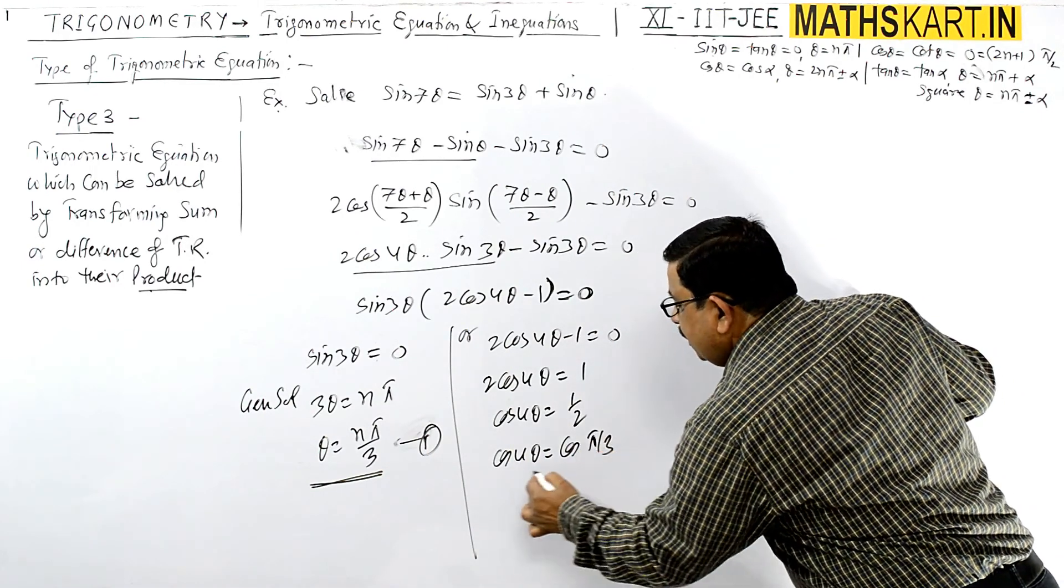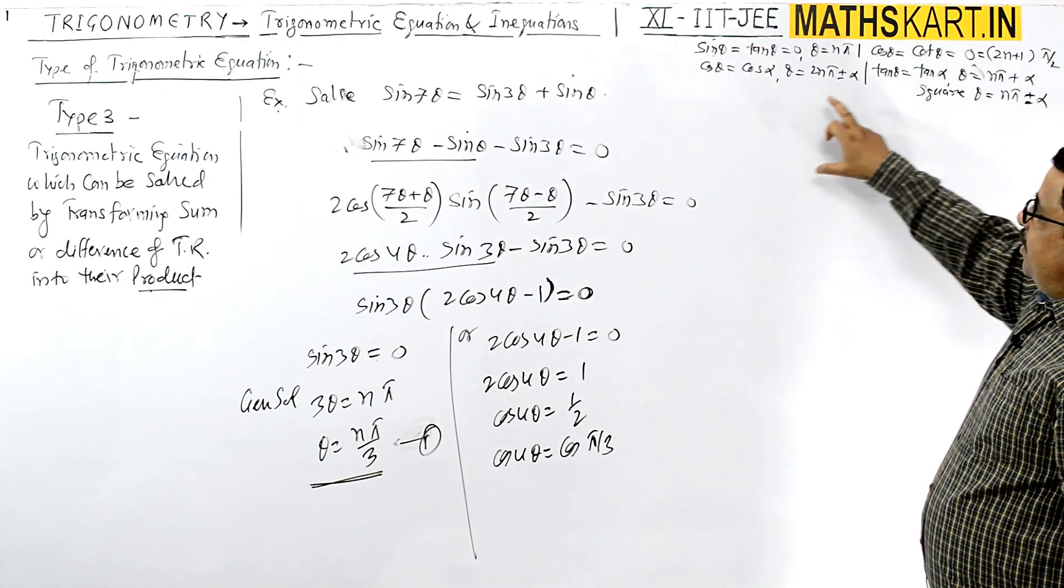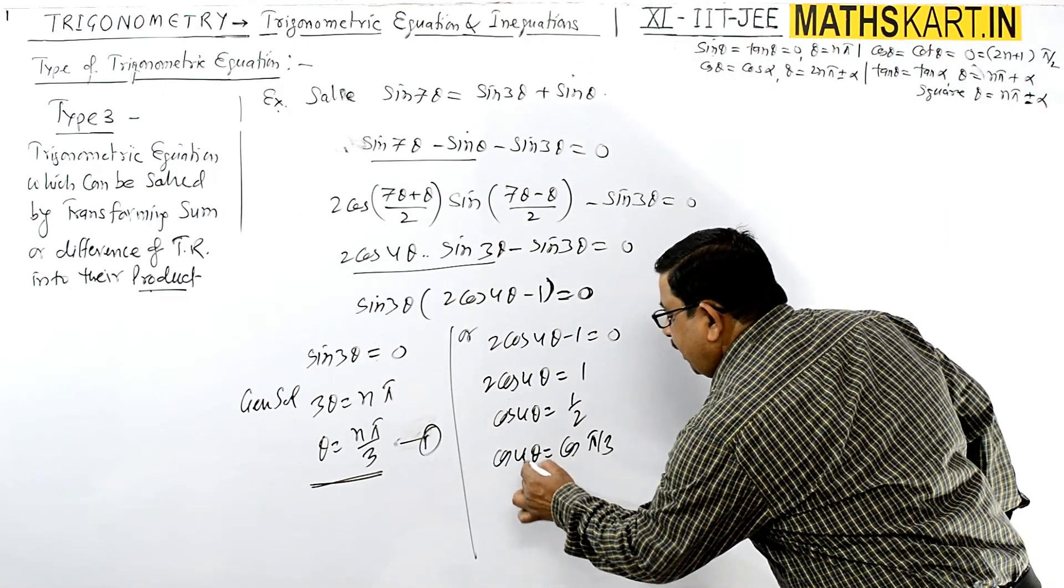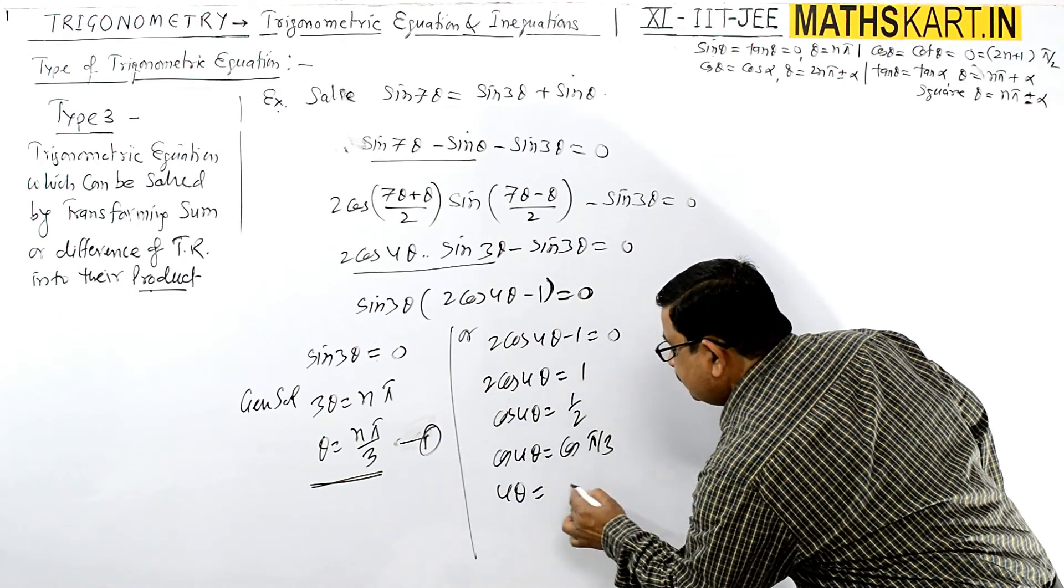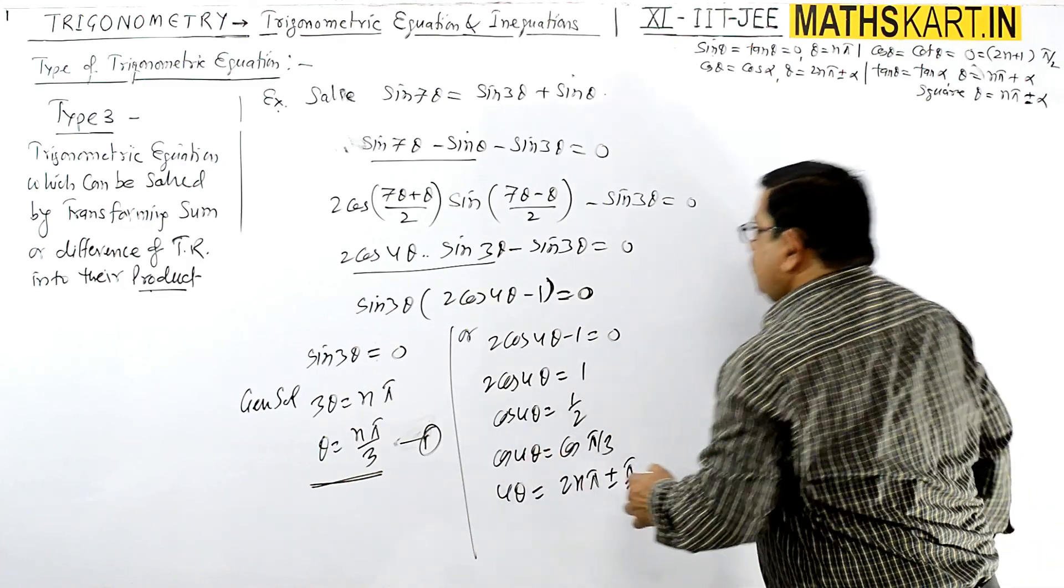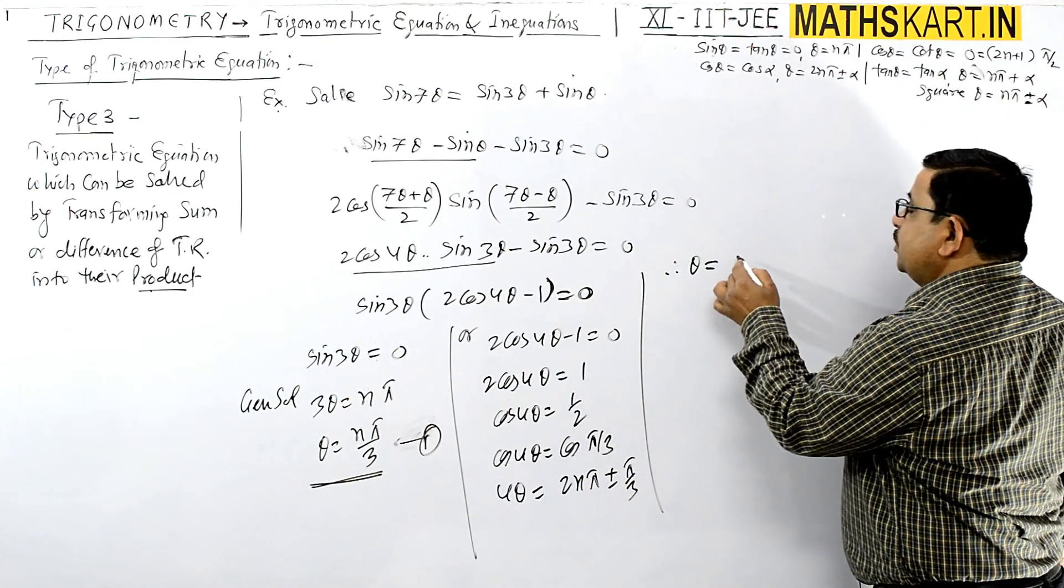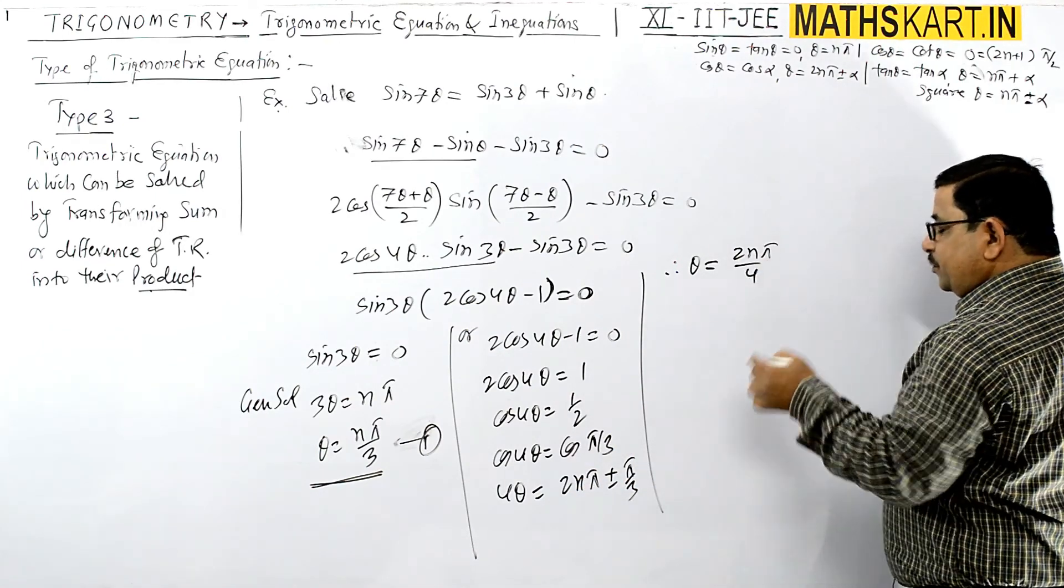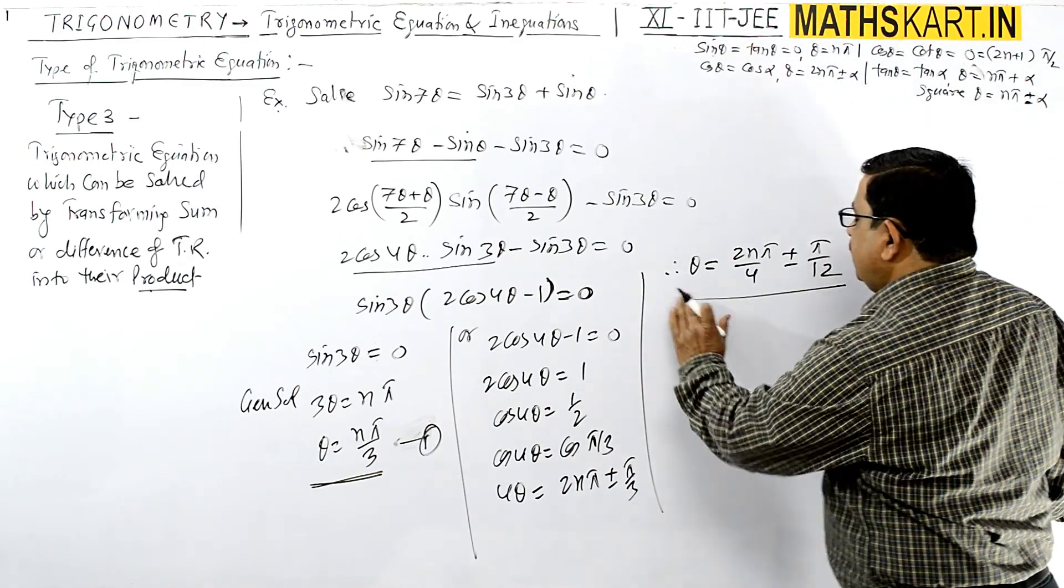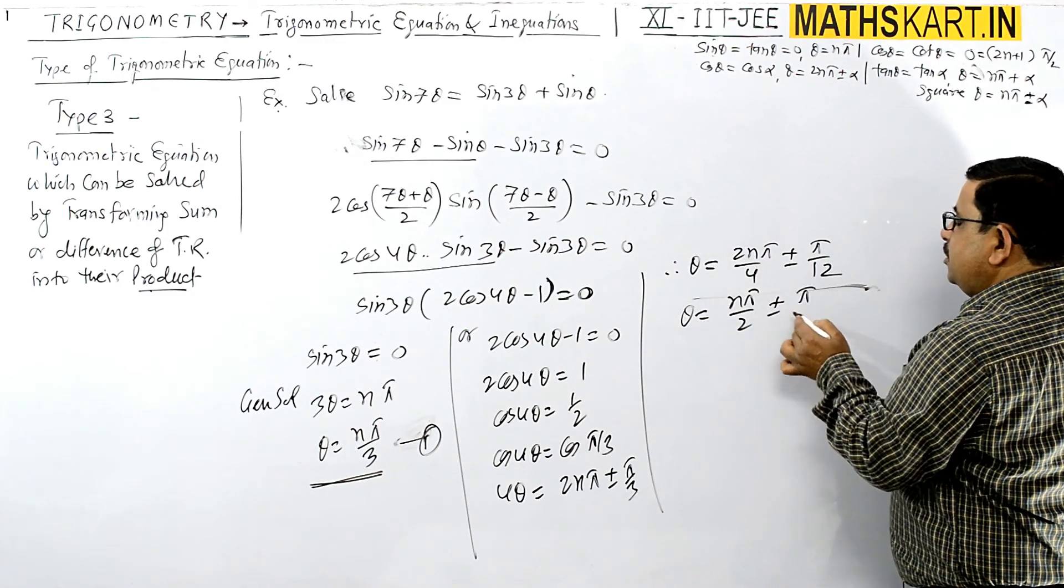This equals cos π/3. When cos θ = cos α, the general solution is θ = 2nπ ± α. Since we have 4θ here, this is 4θ = 2nπ ± π/3. Dividing by 4: θ = (2nπ)/4 ± π/12, which gives θ = nπ/2 ± π/12.